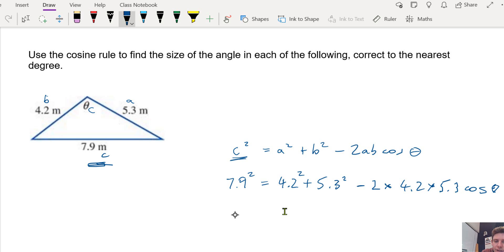Then we have to rearrange this. So we bring the 4.2, the 5.3 over. So we're subtracting those to bring them across the equal sign. And you divide by that. So these are all being multiplied, so the opposite of multiplied is divide. And that equals cos theta.